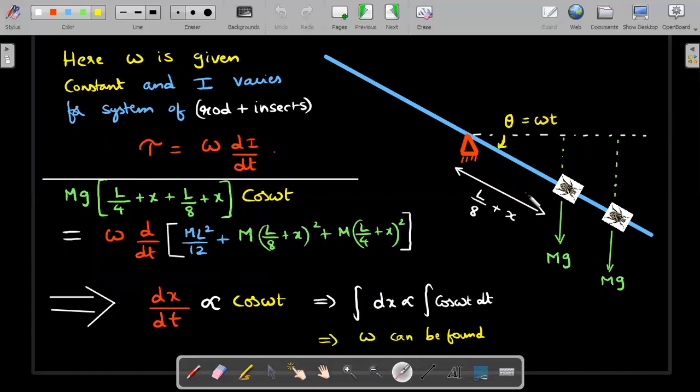Drawing the picture of the rod at any arbitrary angular position theta. Since angular velocity is constant, I can write theta as Omega t. The insect which was at L by 8 has walked distance X, and since both insects walk with same relative speed, this gap between them is maintained at L by 8. So the second insect would be at distance L by 4 plus X. At this instant I'll use tau equals d by dt of I Omega, where Omega is constant.